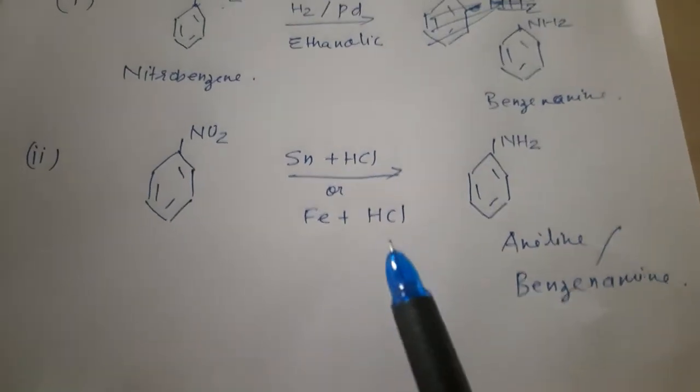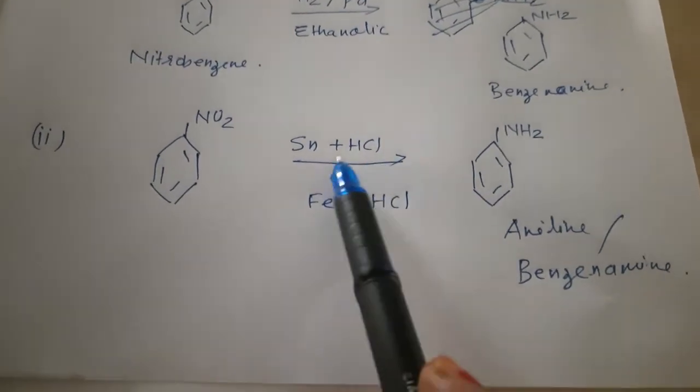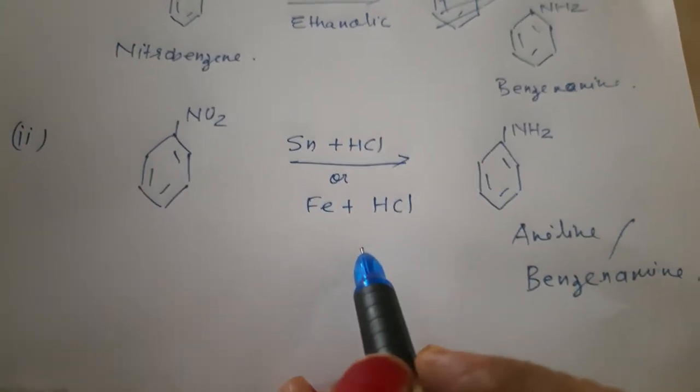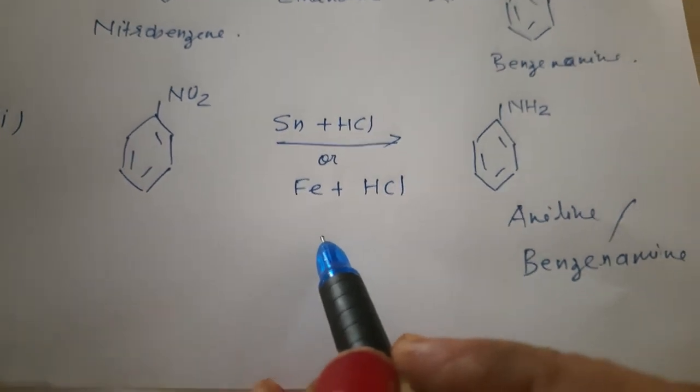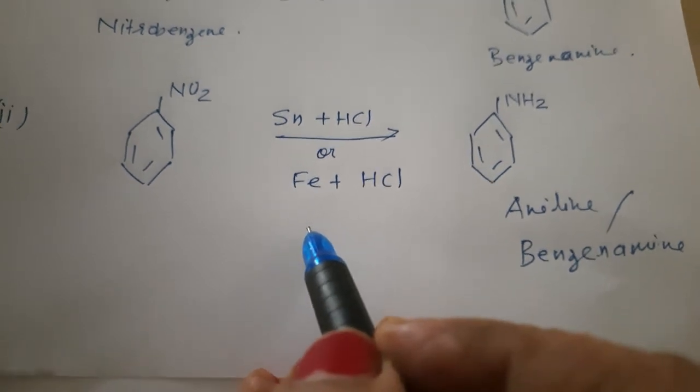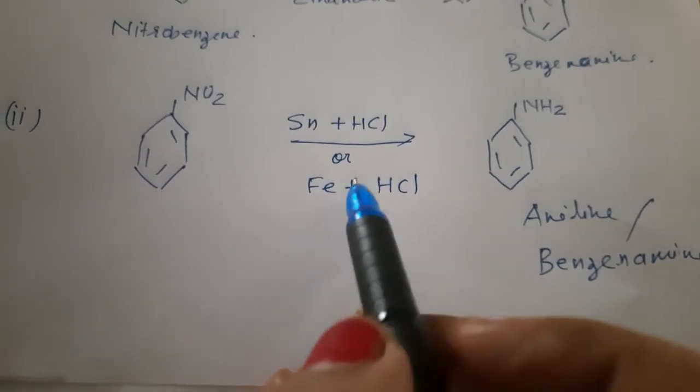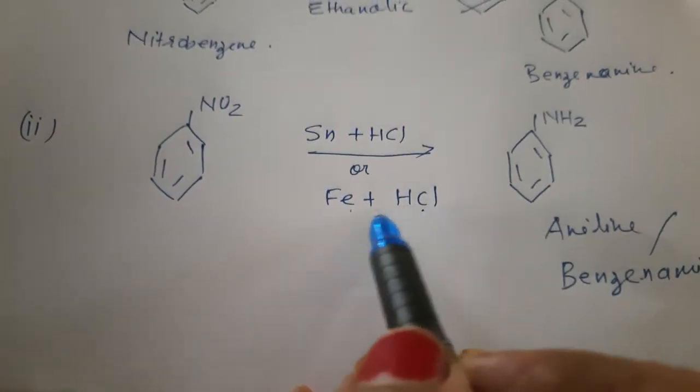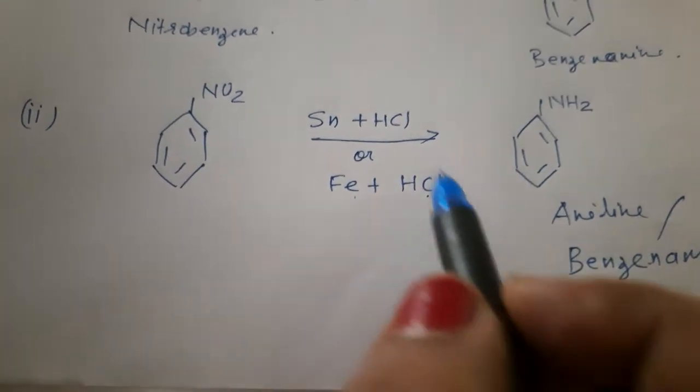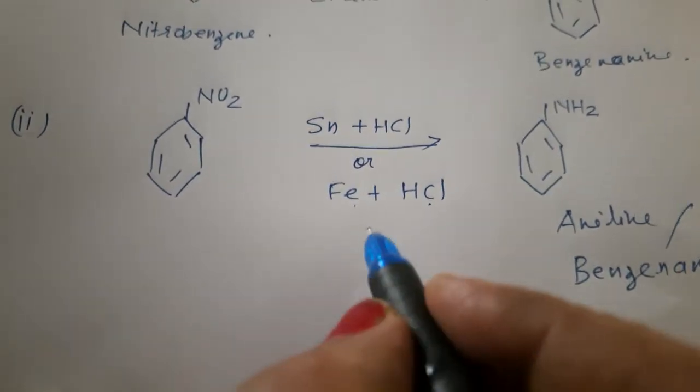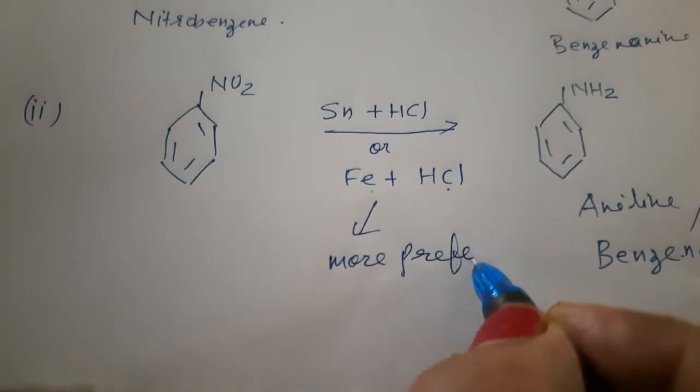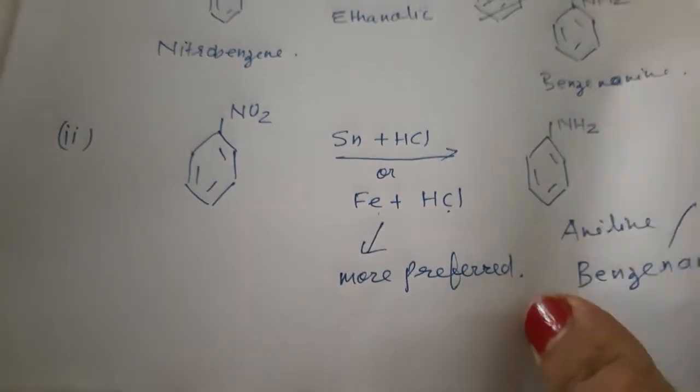Now, we have discussed two methods for reduction with Metal and Acidic Medium, in which Fe and HCl is more preferred. Why it is preferred? Because FeCl2 is formed, which is hydrolyzed to release the HCl during the reaction. So, only a small amount of HCl is required for the reaction. FeCl2 will be formed and when it will be hydrolyzed, then again, after hydrolysis, HCl will be produced. So, only a small amount of HCl is needed. So, it is more preferred.